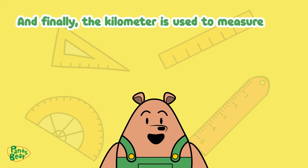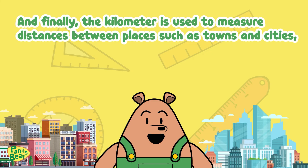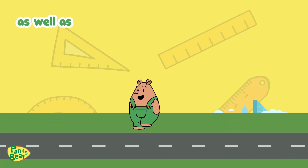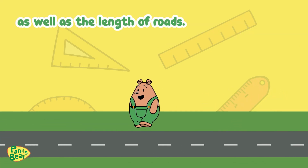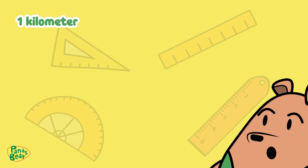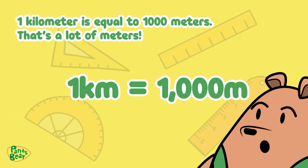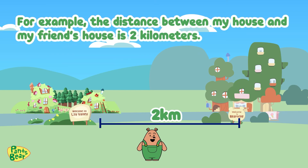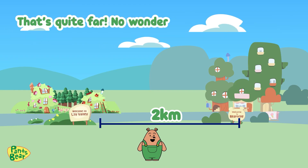And finally, the kilometer is used to measure distances between places such as towns and cities, as well as the length of roads. They are represented by the symbol KM. One kilometer is equal to 1,000 meters. That's a lot of meters! For example, the distance between my house and my friend's house is 2 kilometers. That's quite far!